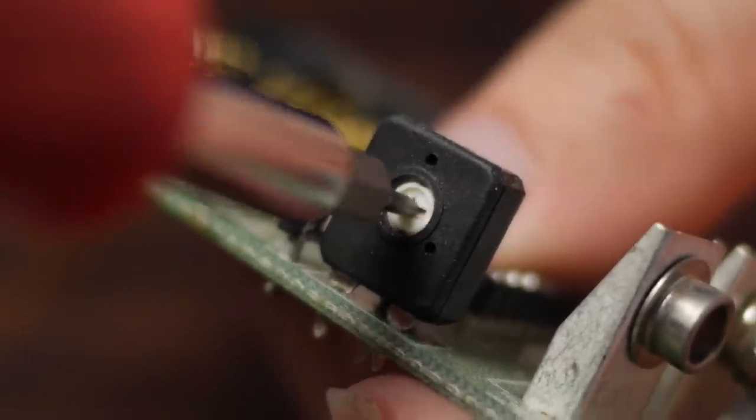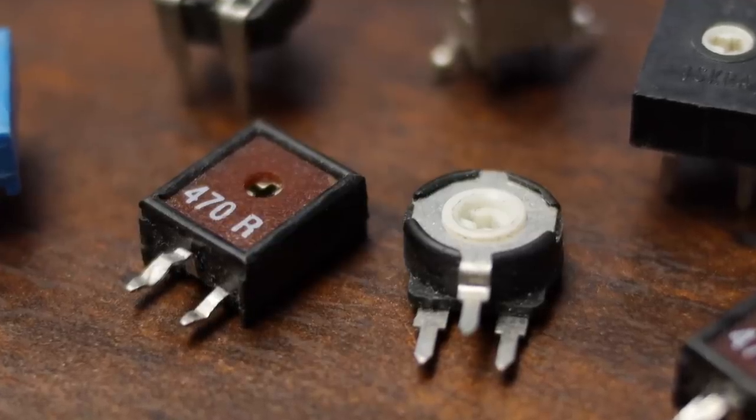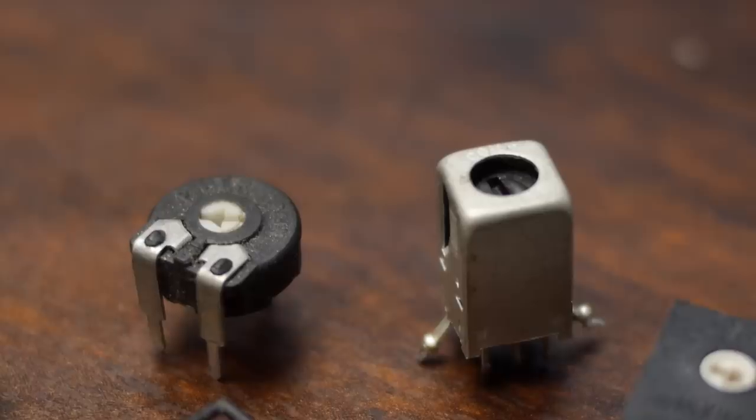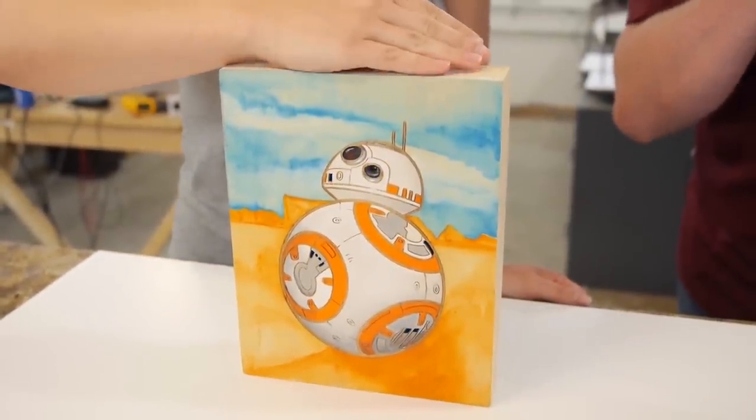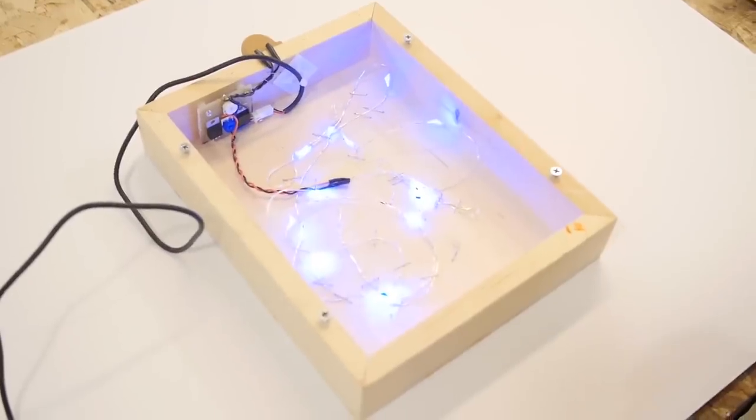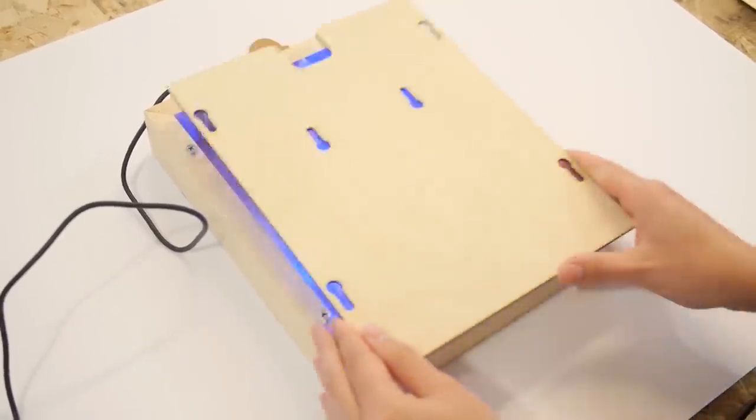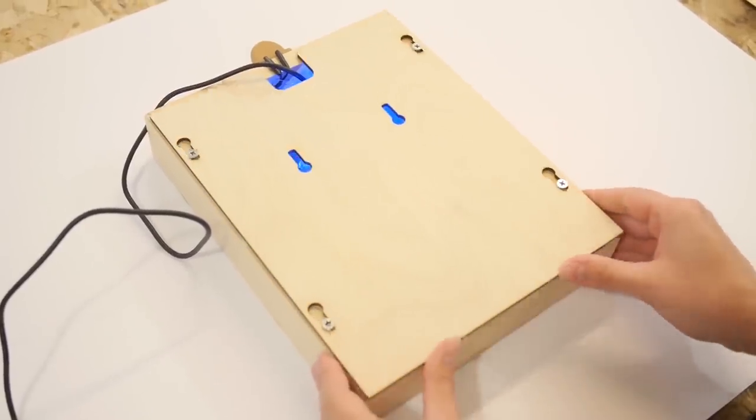Another type of potentiometer is a trimmer pot, also called trim pots or presets. They are normally mounted on PCBs and adjusted by using a screwdriver. They are meant for occasional tuning and calibration. Set it and forget it. Some are multi-turned for higher resolution adjustment. We used these in the Ben Hecks Show episode where we automated the LEDs on my Star Wars BB-8 Art. A trimmer pot was used to control the sensitivity of the photoresistor.